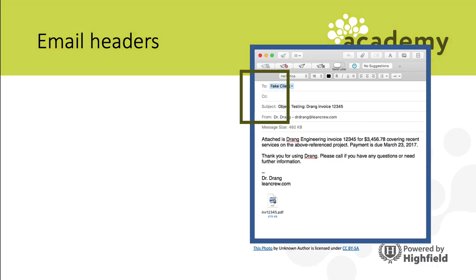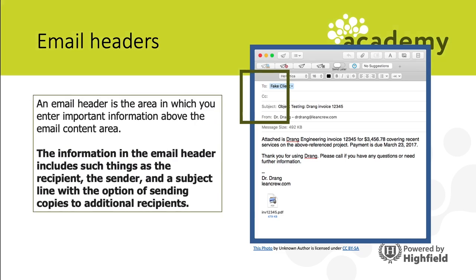Email headers are quite common in the exam. An email might not have many organizational features like headlines or titles, and may or may not have subheadings, but it should always have email headers. The email header is the area containing who the email is to, who it is from, the subject of the email, whether it's been copied to anybody, and possibly the date. A straightforward exam answer would be: 'The writer has used email headers to tell the reader who the email is to, who it is from, and what the subject is.'